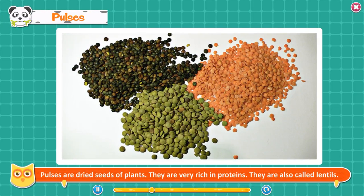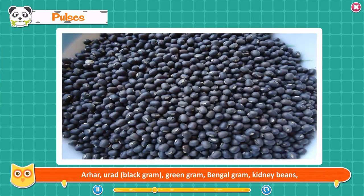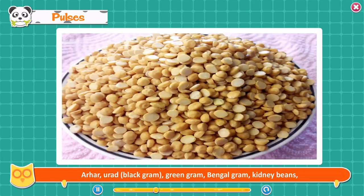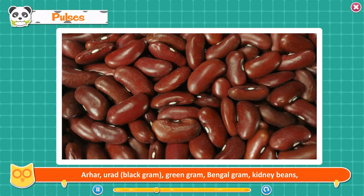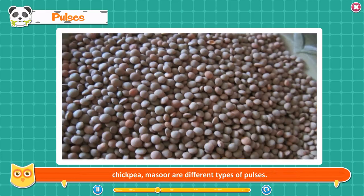Pulses are dried seeds of plants. They are very rich in proteins and are also called lentils. Arhar, urad (black gram), green gram, Bengal gram, kidney beans, chickpea, and masoor are different types of pulses.